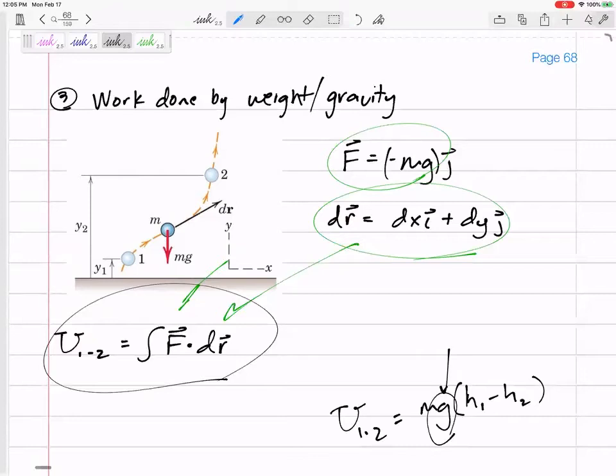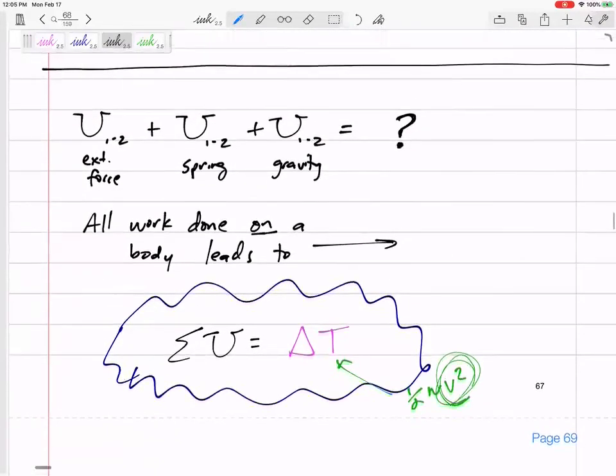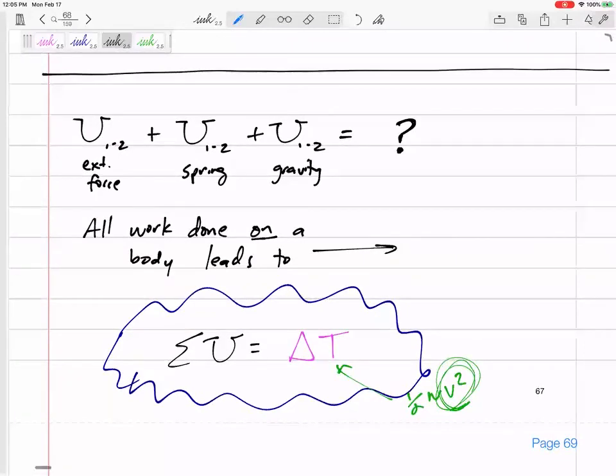So sometimes you can choose your own axes. Not with that formula. With this formula, we already chose positive going up. And we know that leads to the sum of all the work done leads to change in kinetic energy.